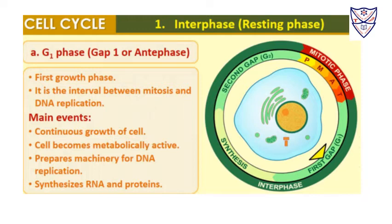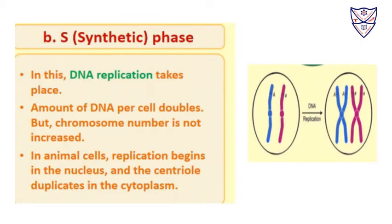Then the S phase begins. Here DNA replication takes place — the DNA multiplies and its amount doubles. However, even though DNA is multiplying, the chromosome number is not increased. In animal cells, replication begins in the nucleus and the centriole duplicates in the cytoplasm.